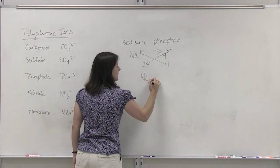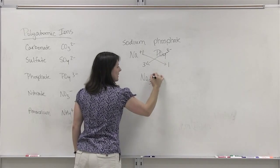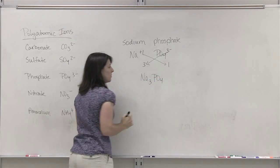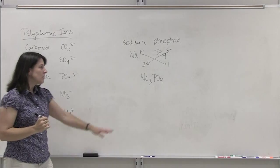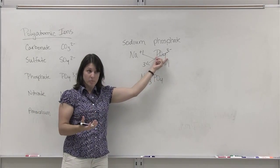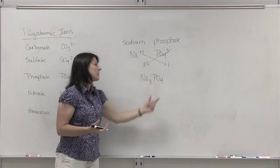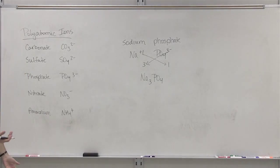So we need three sodiums, but only one group of the phosphate PO4. Notice that I didn't change the subscript that is part of that formula for phosphate PO4. We leave that 4 there. So that would be the formula for sodium phosphate.